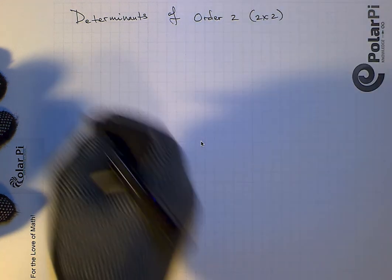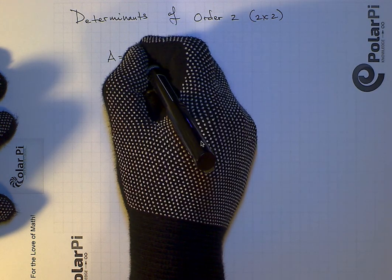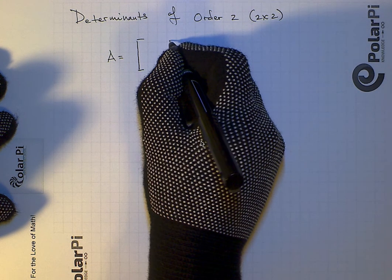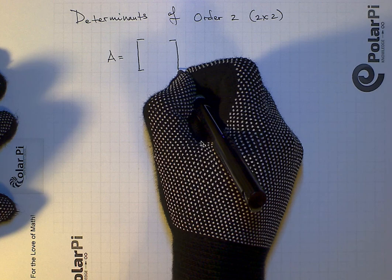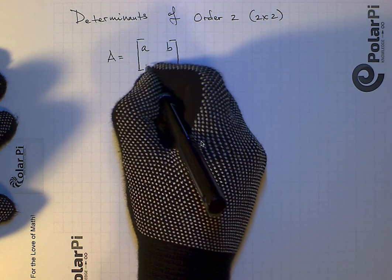And so given a matrix A, so the matrix is called A let's say, and it's a 2x2 matrix so it has four entries. And let's say the entries are A, B, C, and D.